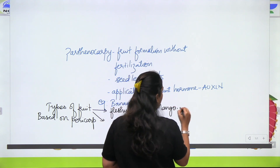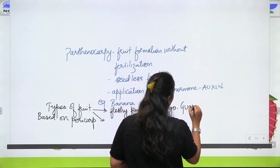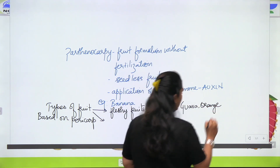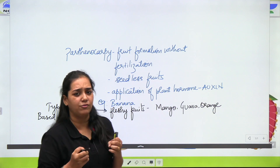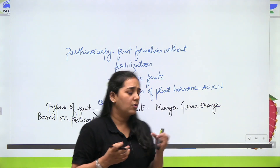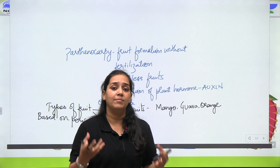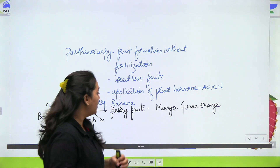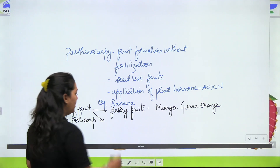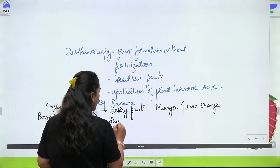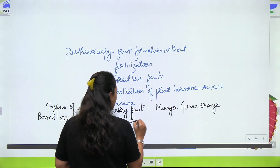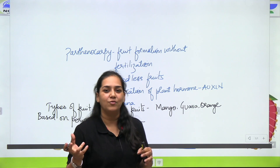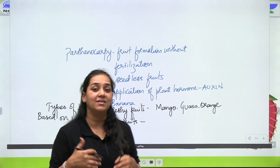Fleshy fruits ke andar again, aapne example le liya mango ka, ya phir aapne example le liya guava ka, aur even orange for that matter. Yeh saare ek dum juicy se fruits hai — guava is nothing but amrood. Fruit wall bohot fleshy hota hai. But as compare to another category jisko hum bulaate hai dry fruit. Dry fruits ka matlab yeh nahi hai ki badam ho gaya, kishmis ho gaya, walnut ho gaya — not that. Dry fruits jo market mein milta hai woh alag hai. Yahan peh hum baat kare hai categorization of fruits based on the fruit wall.